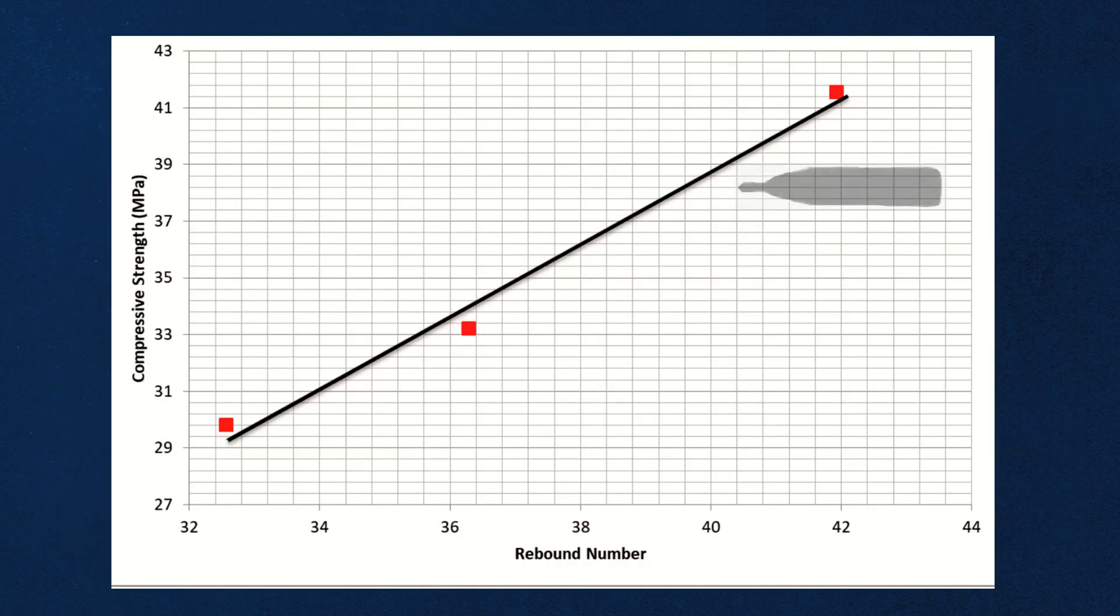Plot the three obtained points on a graph and best fit a linear line. This is your prepared correlation chart and is valid only for the rebound values within the range of the rebound index obtained from the test.